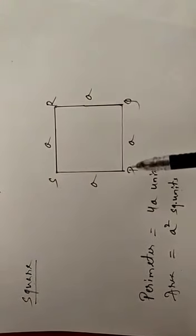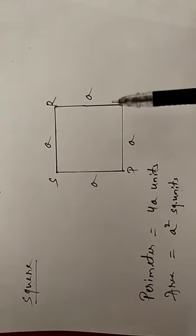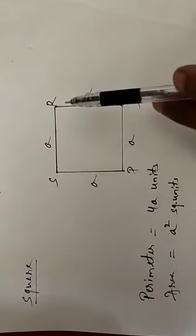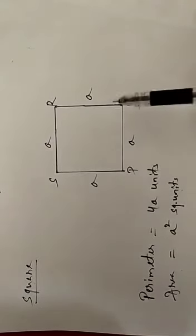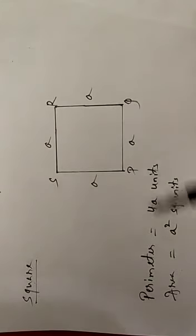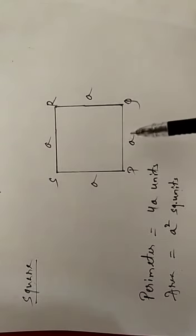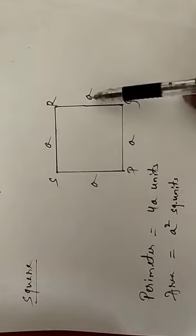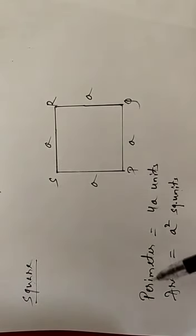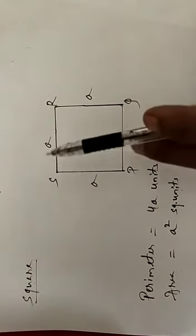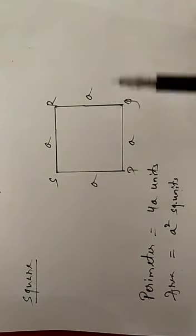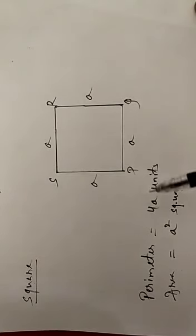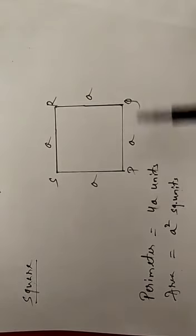Now we will learn to find the area of the square. A square has all four sides equal and each angle is 90°. If each side is 'a', the perimeter formula is a + a + a + a, which equals 4a — that is, 4 times the side — written as 4a units.